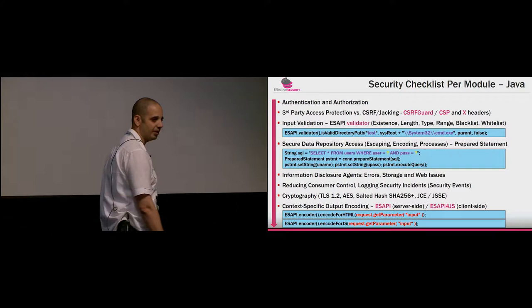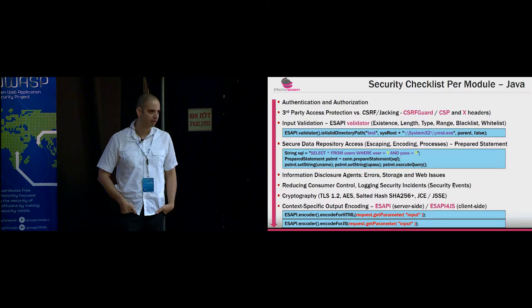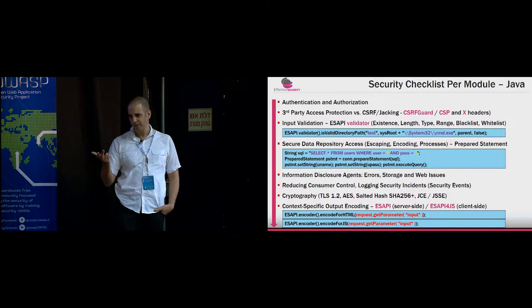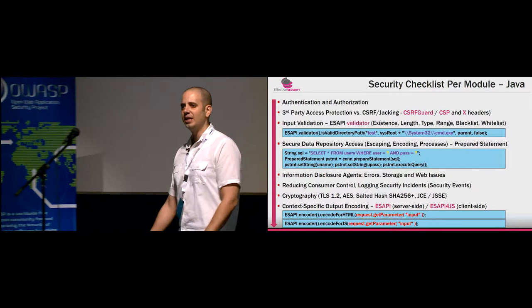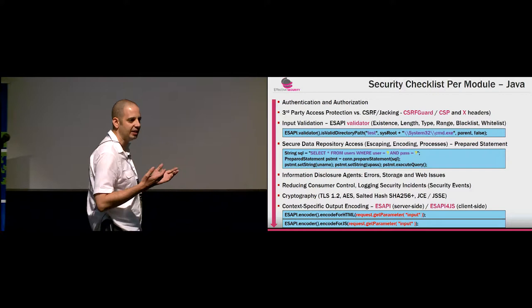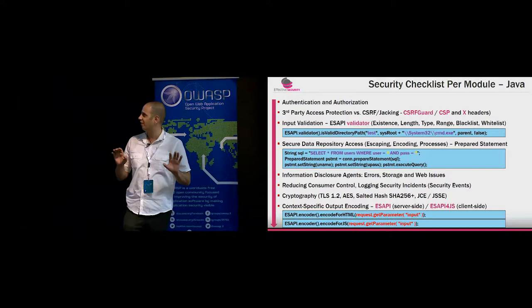As opposed to using a blacklist approach, which is counterproductive, I would even split public content to a different server. I really recommend using the whitelist approach in authentication and authorization — as in, you can't access any page without authentication except the login page, the password recovery page, and the help page. Every technology has its own method to define it. In Java, you can use security constraint instructions in the web.xml files. You can do the same for web.config in any technology.